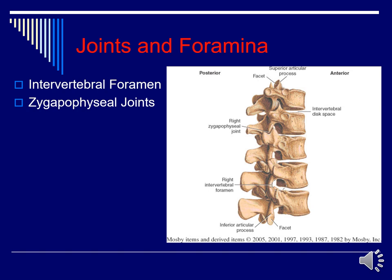The joints and foramen we are interested in are the zygapophyseal joints or apophyseal joints, and the intervertebral foramen. The zygapophyseal joints are formed from the superior articular process and inferior articular process. The intervertebral foramen are formed from the superior vertebral notch and the inferior vertebral notch. It takes two vertebrae for each of those structures to be demonstrated.